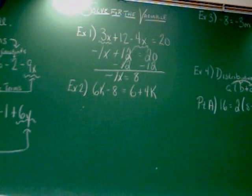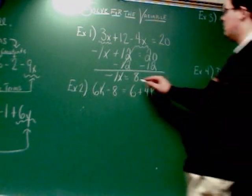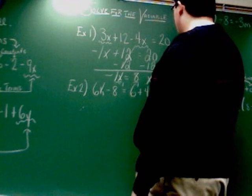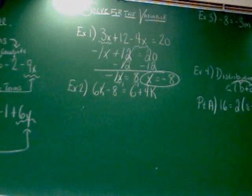So negative 1 times x equals 8. So now it's one step. You should be able to work with a one-step equation by this point. Multiplication equation. The opposite is to divide. In this case, I have to divide by negative 1. And that will give me x equals negative 8.